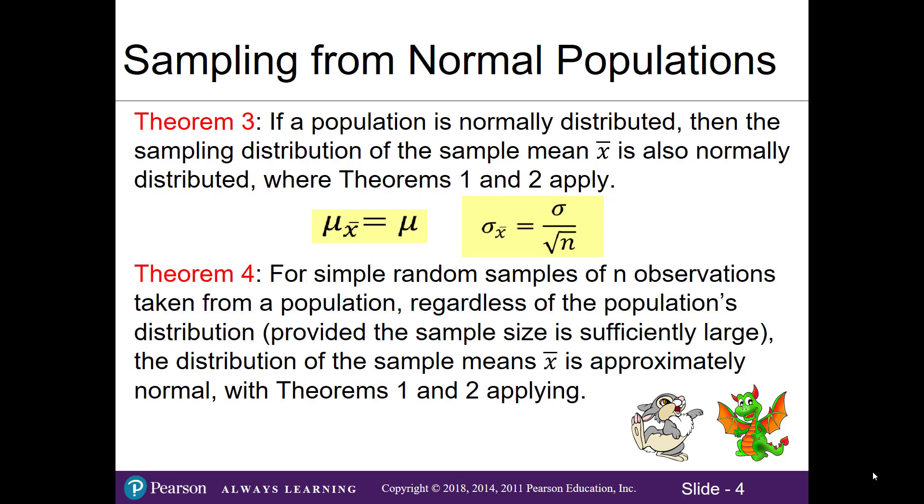Now in theorem 4, which you watched a video on regarding bunnies and dragons, for simple random samples of n observations taken from a population, regardless of the population's distribution—whether it's normally distributed, skewed, or bimodal—as long as the sample size is sufficiently large, then the distribution of our sample means is approximately normal, again allowing for theorems 1 and 2 to apply.